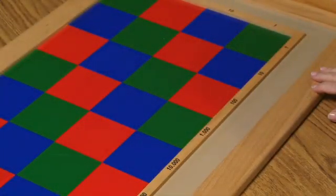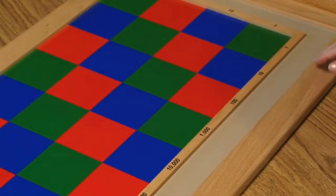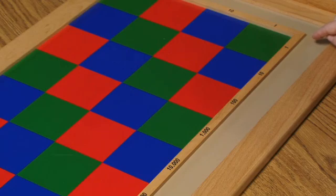This is one digit multiplication on the checker board. Now we're going to create a multiplicand and we'll be using these white tiles to represent the multiplicand.